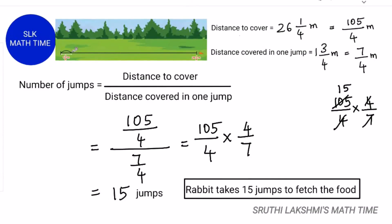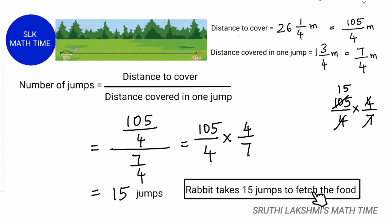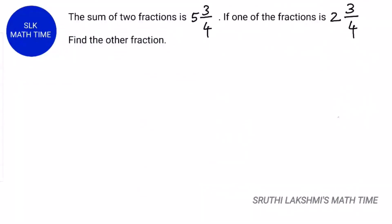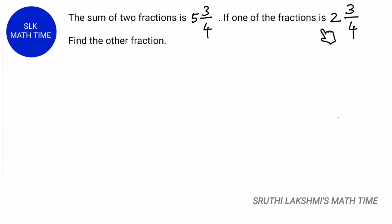The sum of two fractions is 5 3 by 4. If one of the fractions is 2 3 by 4, find the other fraction.